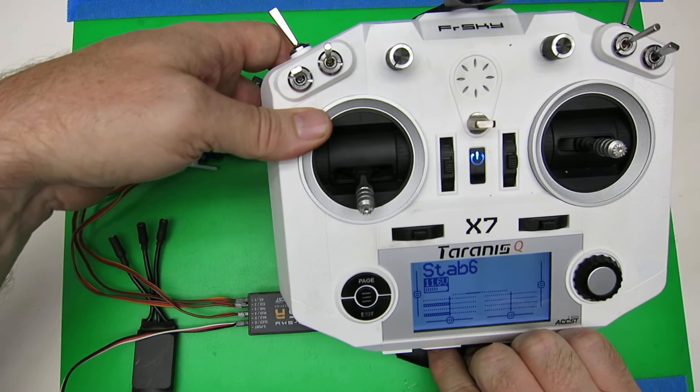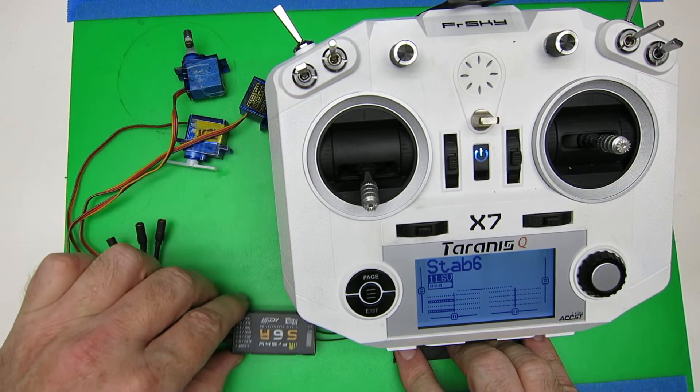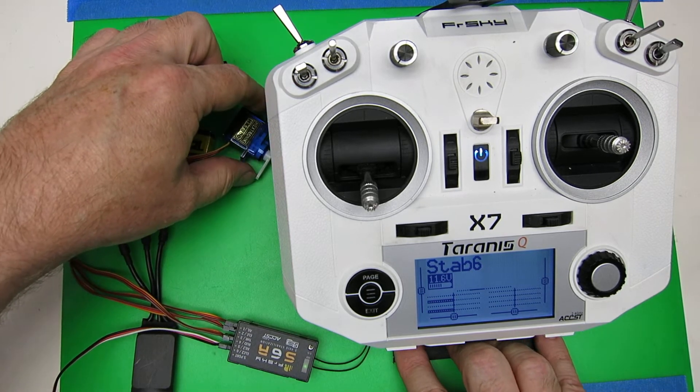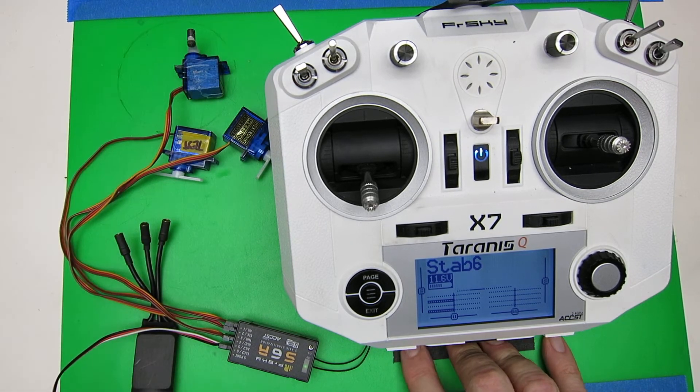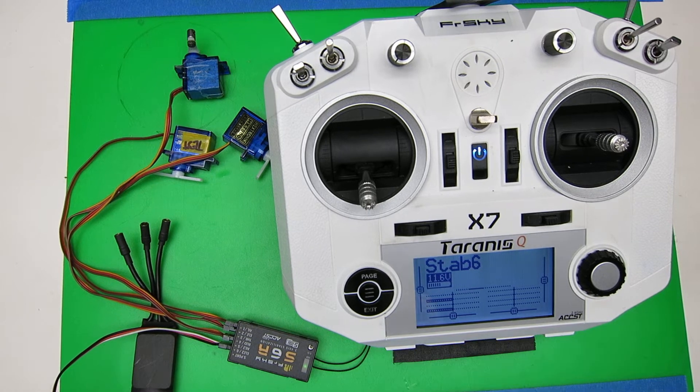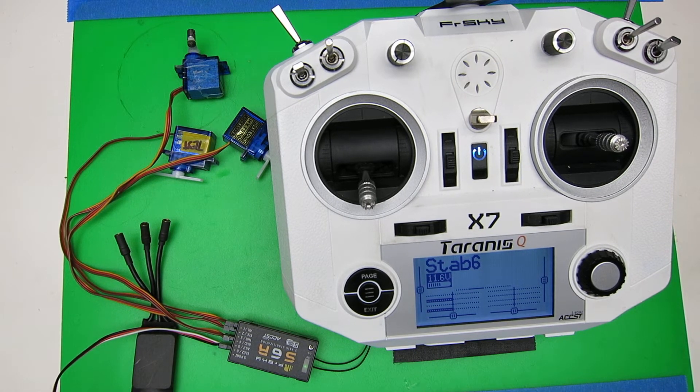You'll recall that we set channel 12 to be the self-test. Now if you've got the gear up and gear down on your plane, be sure and get the weight off of your wheels, because this is going to exercise channels 5 and 6, even though you've specified that it's auxiliary, and it's going to raise and lower your wheels if you've got those on channel 5 or channel 6. If you don't have that set up, you don't have to worry about it.